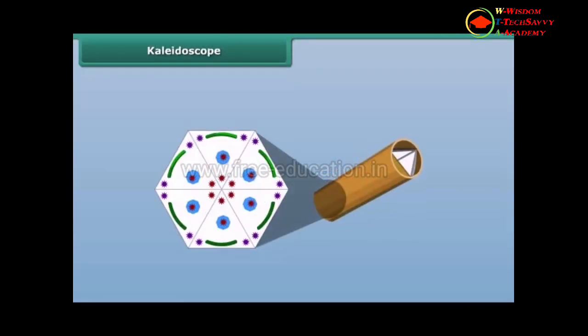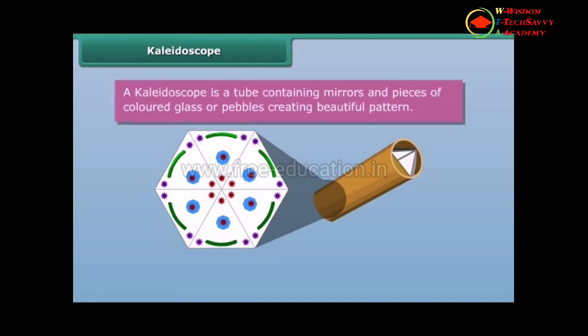What is a kaleidoscope? It is a tube containing mirrors and pieces of colored glass and pebbles. As the viewer looks into one end, light entering the other end creates a colorful pattern due to the reflection of the mirrors when rotated. Let us perform an activity to make a kaleidoscope.